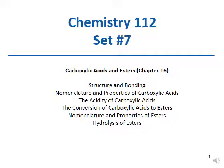This is set seven regarding carboxylic acids and esters. We'll cover structure and bonding, nomenclature, the acidity of carboxylic acids, interconversion from carboxylic acid to esters, and then reactions, naming, and properties of esters themselves. These were two compound types we touched on in the last set about aldehydes and ketones, so let's keep going through the different functional groups.